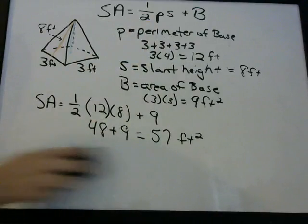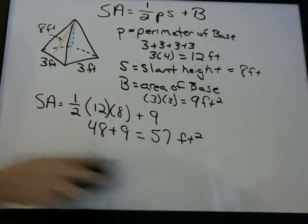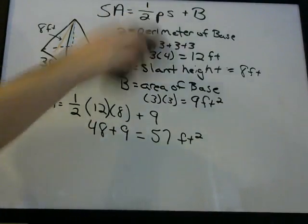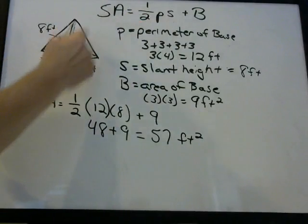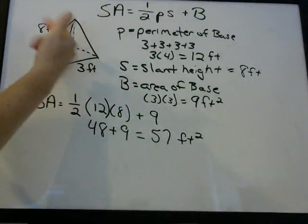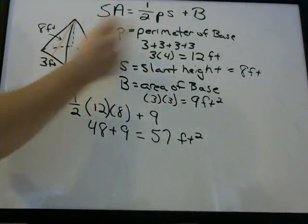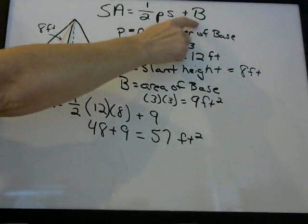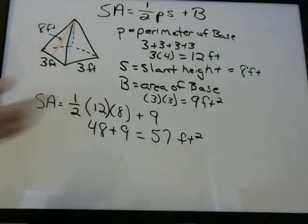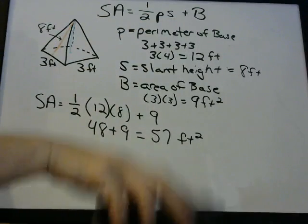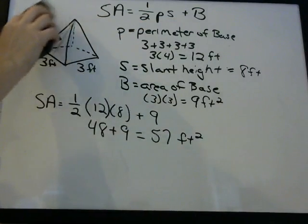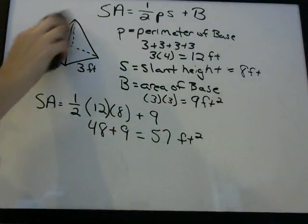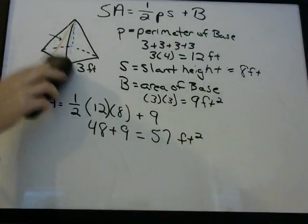Just remember — this first part before the plus sign is giving you the total area for the four sides. This second part is giving you the area for the bottom. We'll do one more problem that's a little bit more computationally challenging.